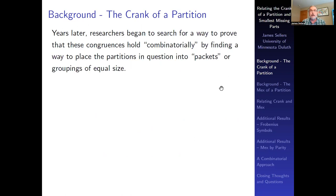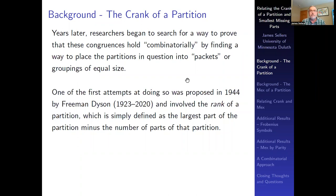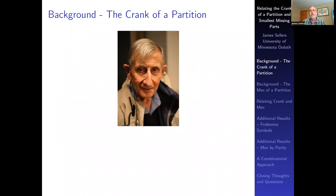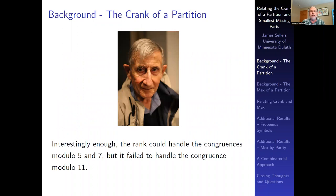Researchers began thinking about how to prove such congruences combinatorially — could one find a partition statistic that would put the partitions into packets or groupings, whereby one would see the divisibility properties? One of the first attempts appeared in 1944 in a paper in Eureka written by Freeman Dyson, involving something Dyson called the rank of a partition: the largest part minus the number of parts.